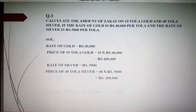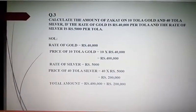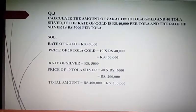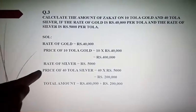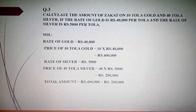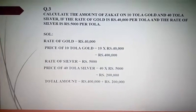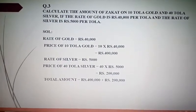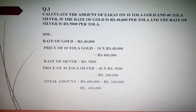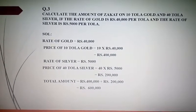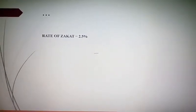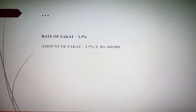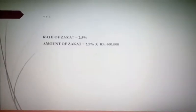Total amount find کرنی ہے — gold کی price اور silver کی price دونوں کو add کریں گے۔ Rupees 400,000 کو 200,000 میں add کریں گے and we get rupees 600,000. اب اس 600,000 میں سے Zakat find کریں گے — rate of Zakat 2.5% ہے۔